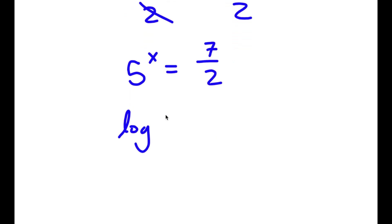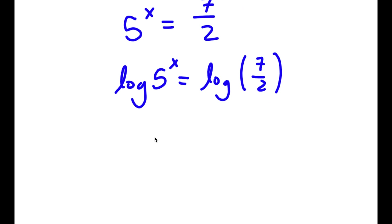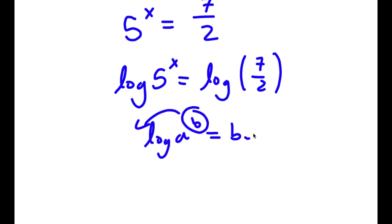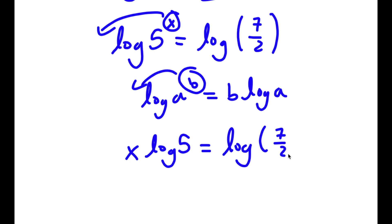Now if I take the log on both sides, I have log 5 to the power of x is equal to log 7 over 2. If I have something in the form log a to the power of b, I can move this exponent b to the front — so this equals b times log a. So log 5 to the power of x becomes x times log 5 is equal to log 7 over 2.